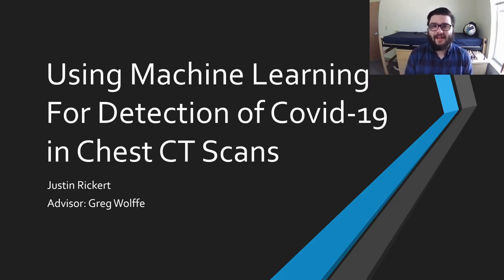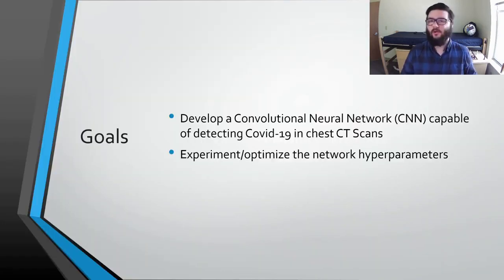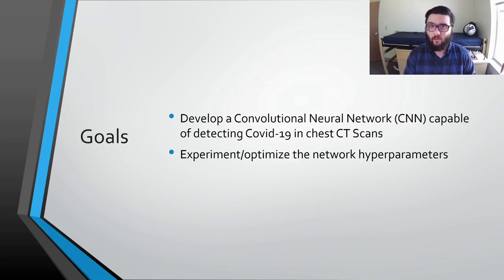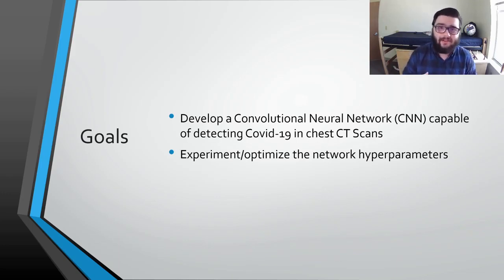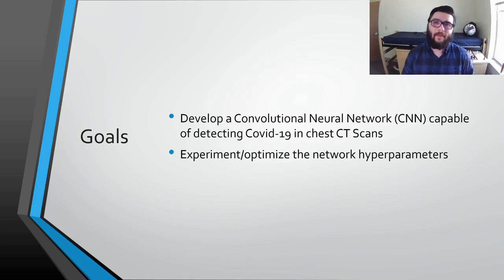Hi there, my name is Justin Rickert and this semester I worked on using machine learning to detect COVID-19 in chest CT scans. Our two main goals this semester were first to develop a working convolutional neural network that could make accurate predictions on these chest CT scans, and then once we got that up and running, our second goal was to run experiments on the hyperparameters of the model and see if we could squeeze out some extra accuracy or find some interesting insights in how the model works.